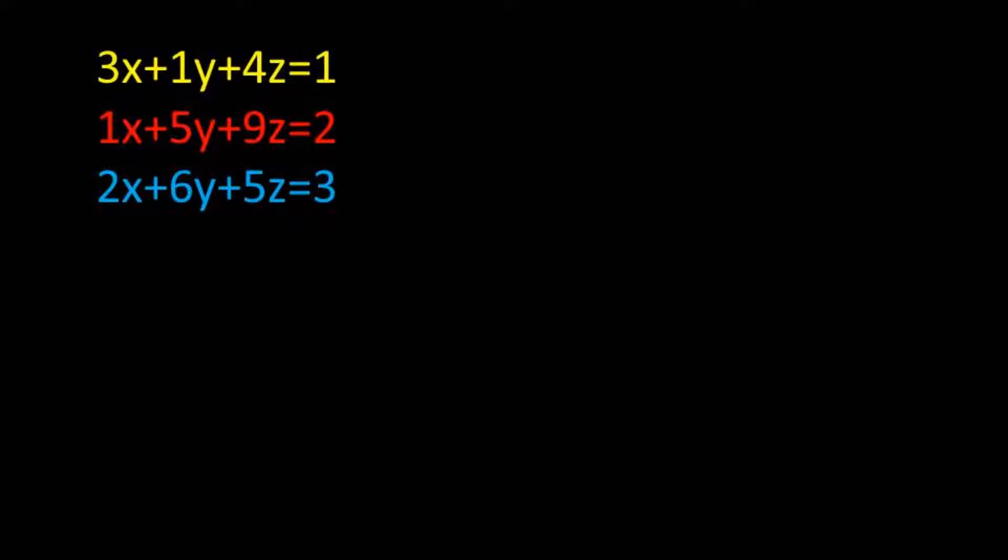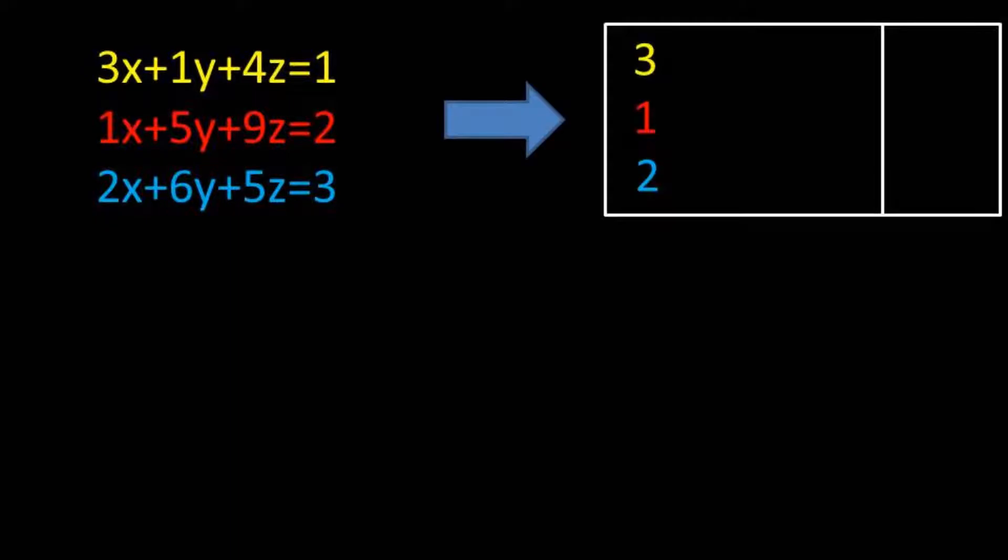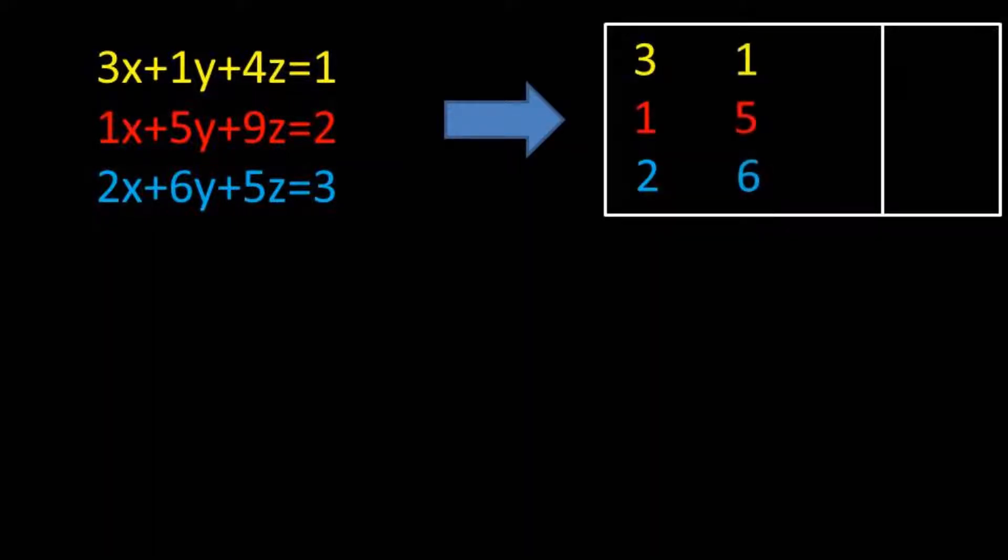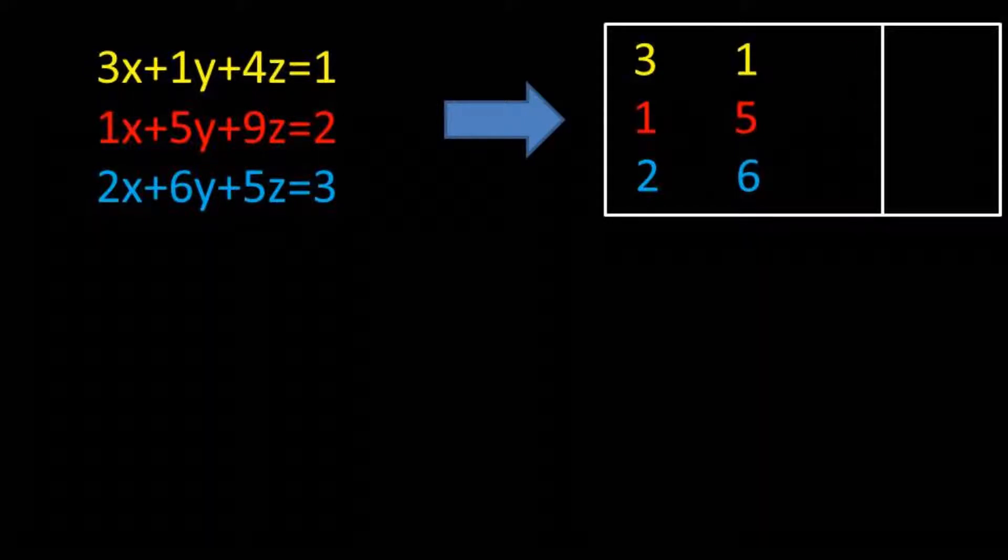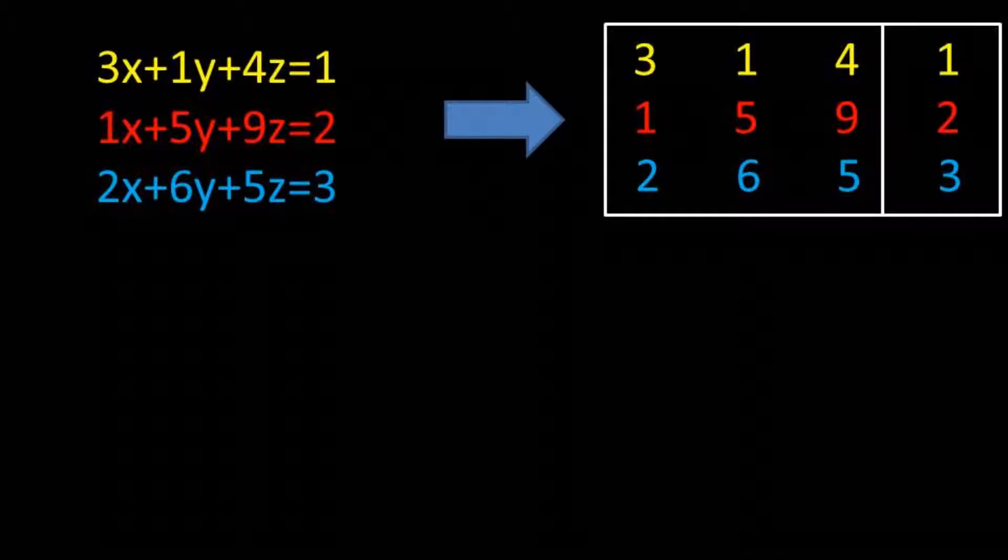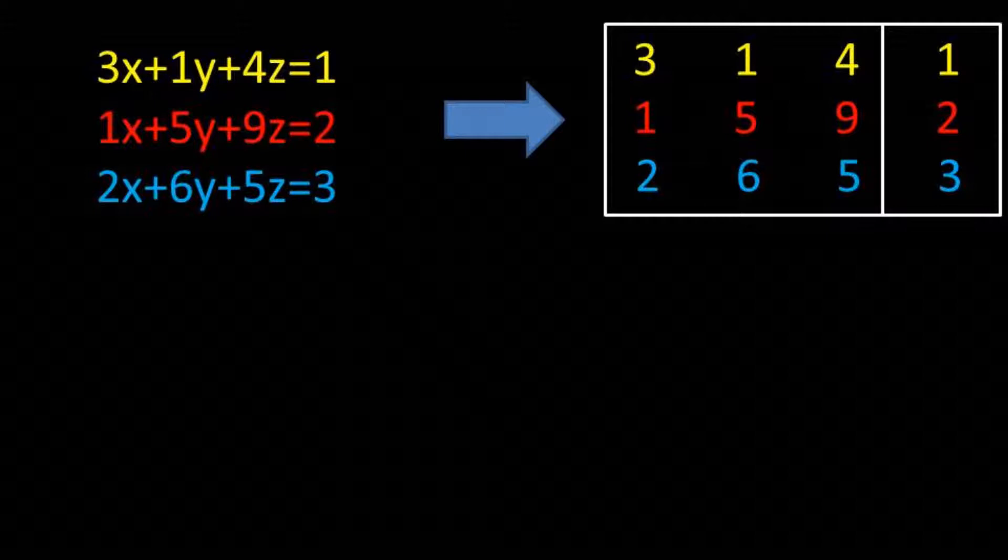Now it's time to put these numbers into a matrix. Let's first put the constants in front of the x variable in the first column. We will then put the constants in front of the y variable in the second column. The constants in front of the z variable will go into the third column. And finally, we'll put the constants on the other side of the equal sign in the fourth column.